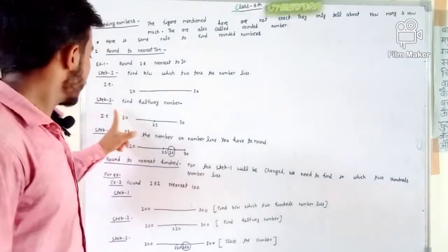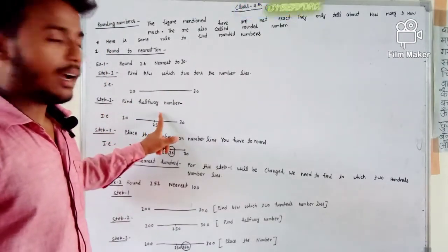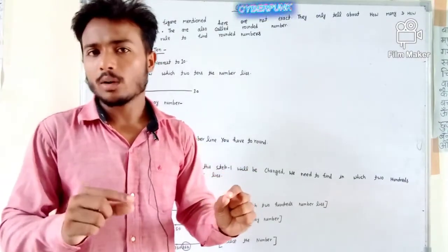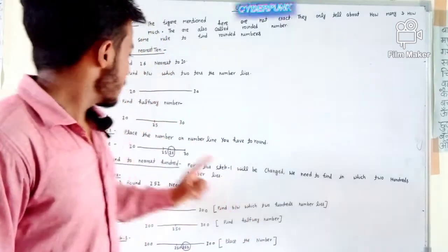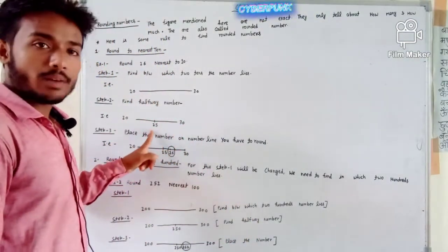Second step: Find the halfway point. The half of these numbers, between 20 and 30, would be 25. Step 2 is that 20 and 30's halfway point is 25.